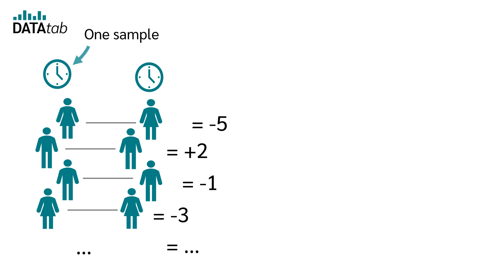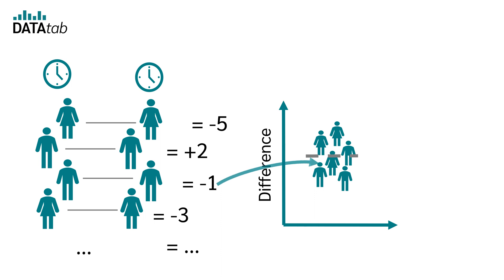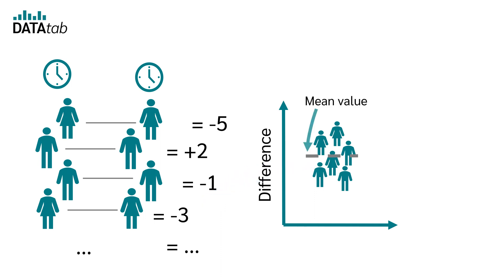We then calculate the difference between the paired values, giving us a value for one sample. The differences are, for example, once minus 5, once plus 2, once minus 1, and so on. Now we want to test whether the mean value of the differences deviates from a reference value — in this case 0. This is exactly what the one-sample t-test does.